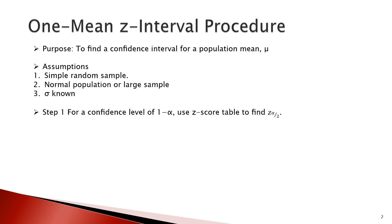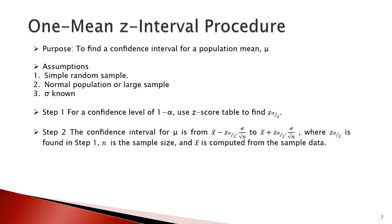Now let's learn the procedure step by step. The first step is to find the Z score of alpha over 2 for a confidence level of 1 minus alpha. For this, we use the Z score table in order to get Z alpha over 2.